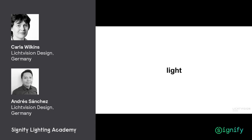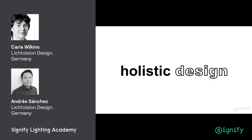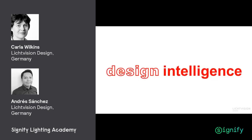Light is defined as electromagnetic radiation within a certain portion of the electromagnetic spectrum. This term usually refers to visible light to the human eye, which is responsible for the sense of sight. With this in mind, we believe artificial lighting is a holistic design — it's not an island. We have to use all our design intelligence, and we have a lot of that.